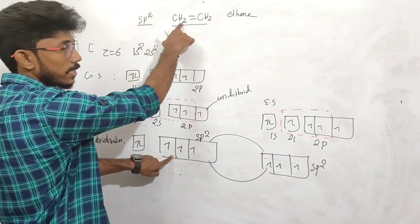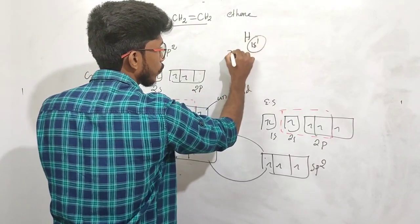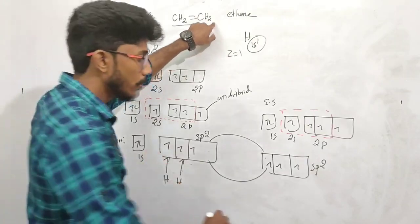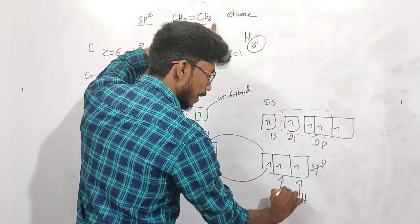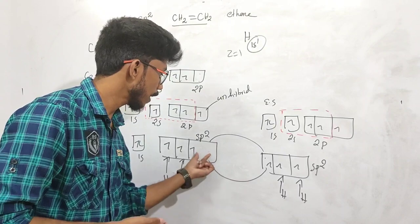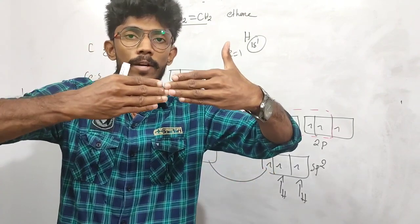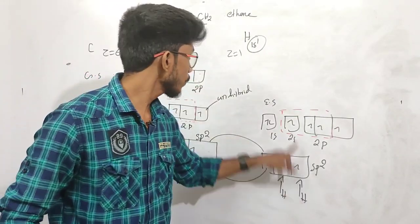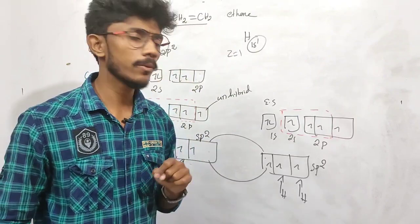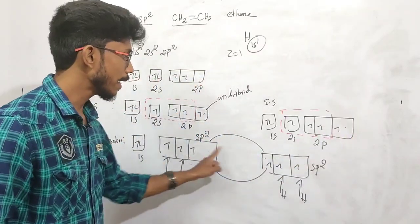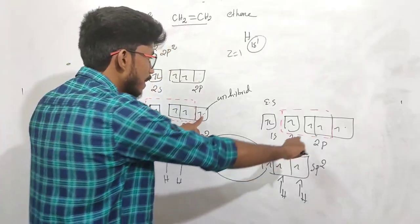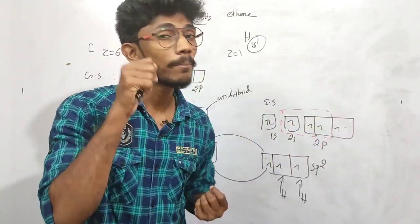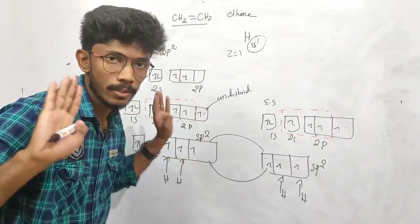In carbon, there are 3 SP2 hybrid orbitals. Each overlaps with a hydrogen 1s1 orbital — 1 hydrogen here and 1 hydrogen there. In the covalent bonding, we have an axial overlap forming a sigma bond. The unhybridized orbital forms a lateral overlap — that is a pi bond. These two overlaps form a lateral overlap — a pi bond.